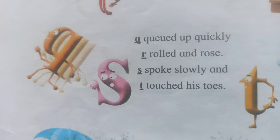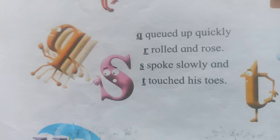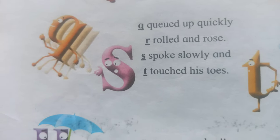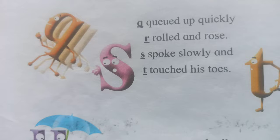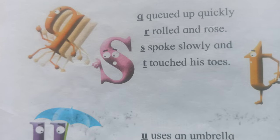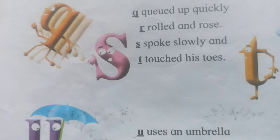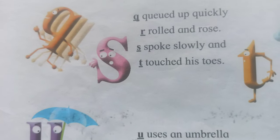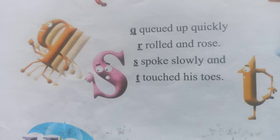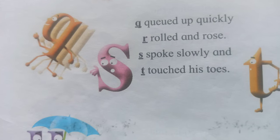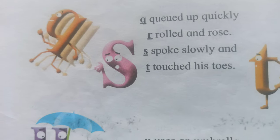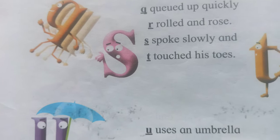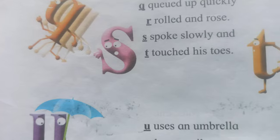Q — curled up quickly, R — rolled and rose, S — spoke slowly, and T — touched his toes. Q — curled up quickly, R — rolled and rose, S — spoke slowly, and T — touched his toes.